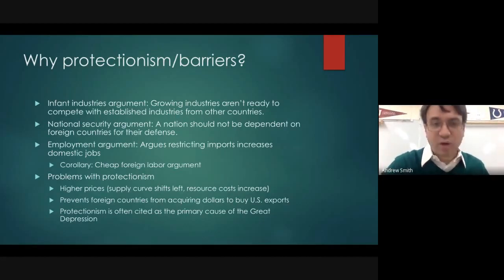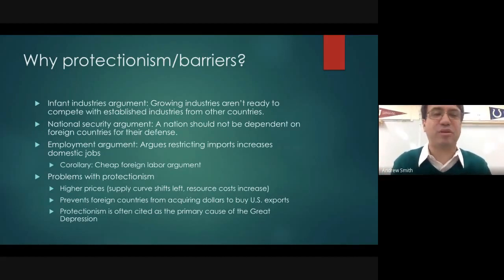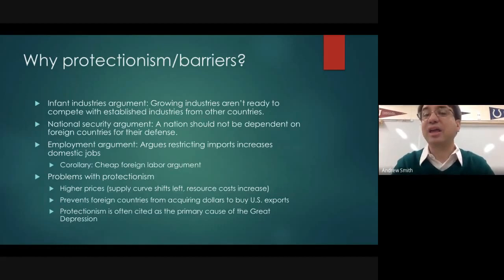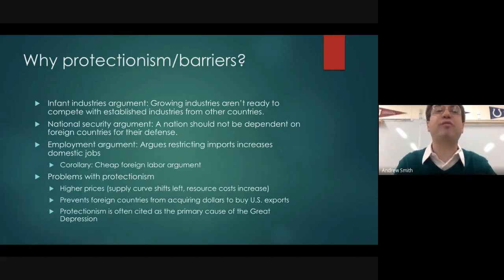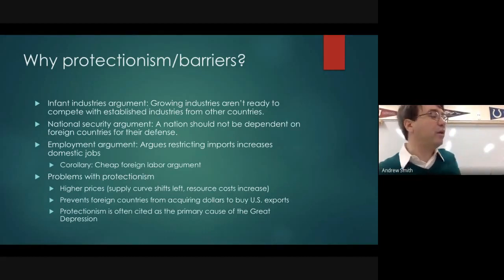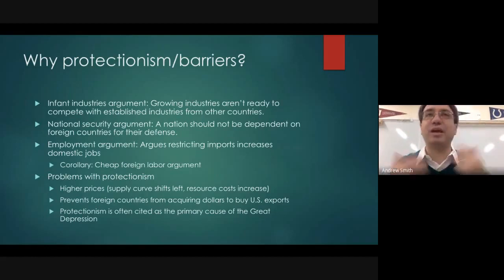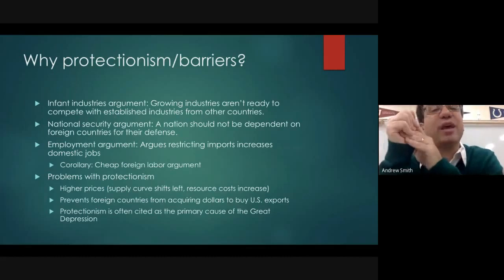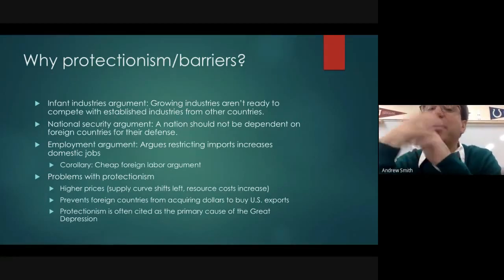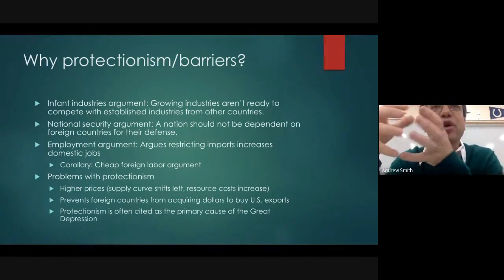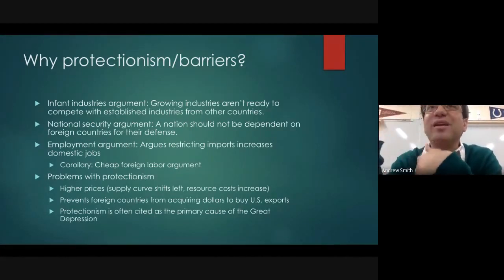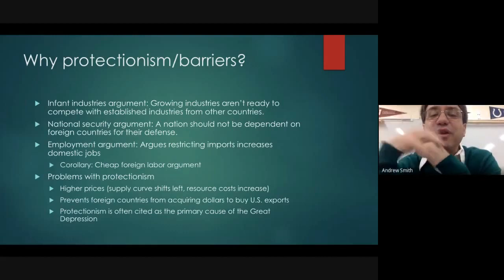There are generally three reasons why countries use trade barriers. One is the infant industries argument — Alexander Hamilton's argument in 1789 and 1790 — which is that we have young industries that are not ready to compete with established British and French industries. Therefore we need to protect our industries from competition until they can mature and grow. The problem is, when do you declare your industries mature enough to remove the barriers? Those who are on the gravy train generally don't want it stopped.